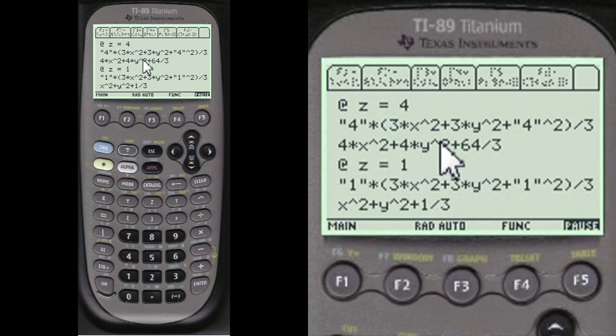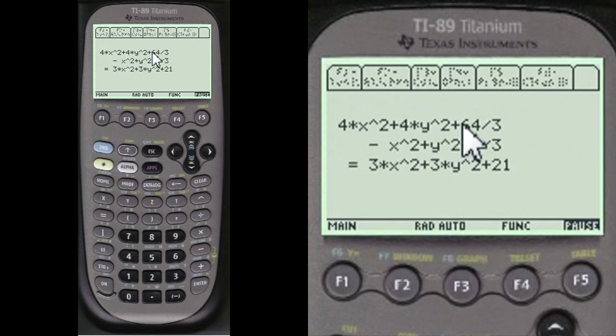Here's the answer for this one. Then for z equals 1, here's the answer for that one. And upper minus the lower equals this.